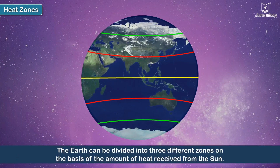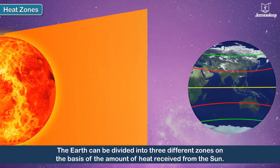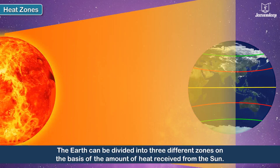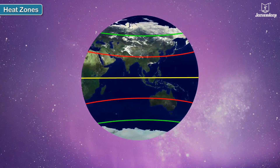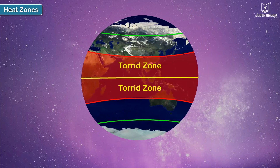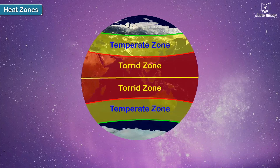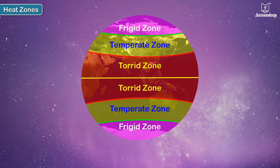Heat zones: the Earth can be divided into three different zones on the basis of the amount of heat received from the sun. The three different heat zones are the Torrid Zone, the Temperate Zone, and the Frigid Zone. Let us learn a little about the position and the climate of these heat zones.